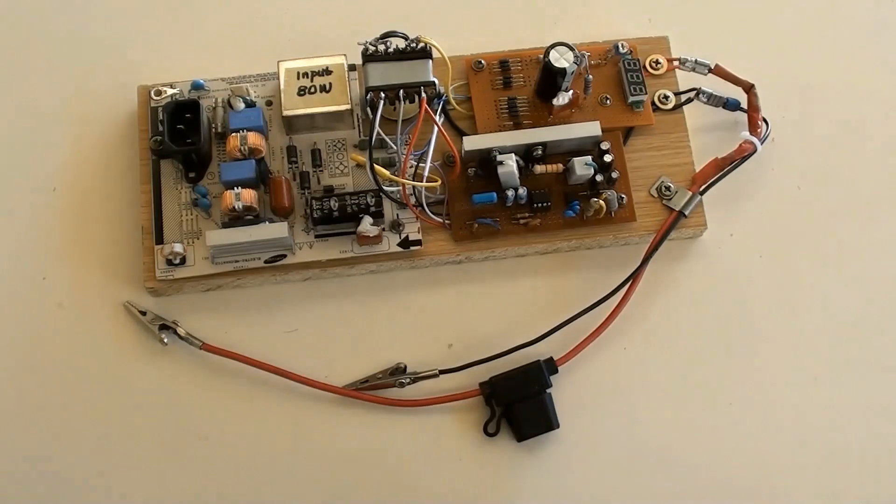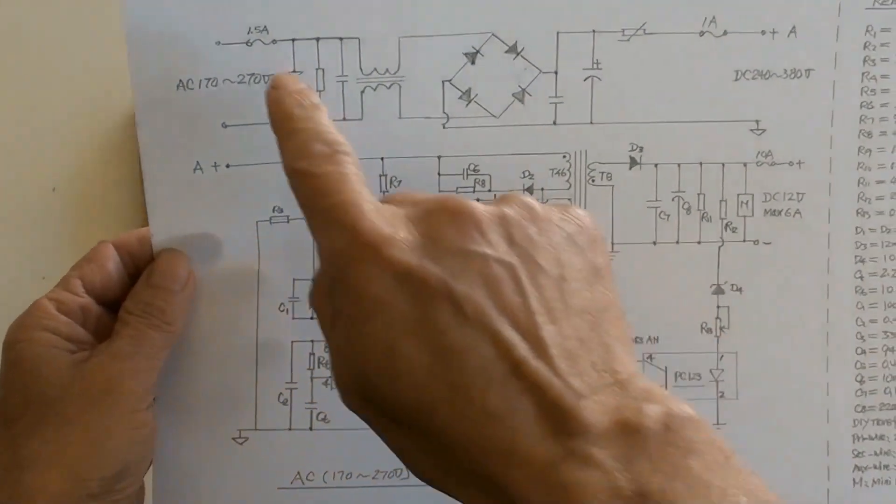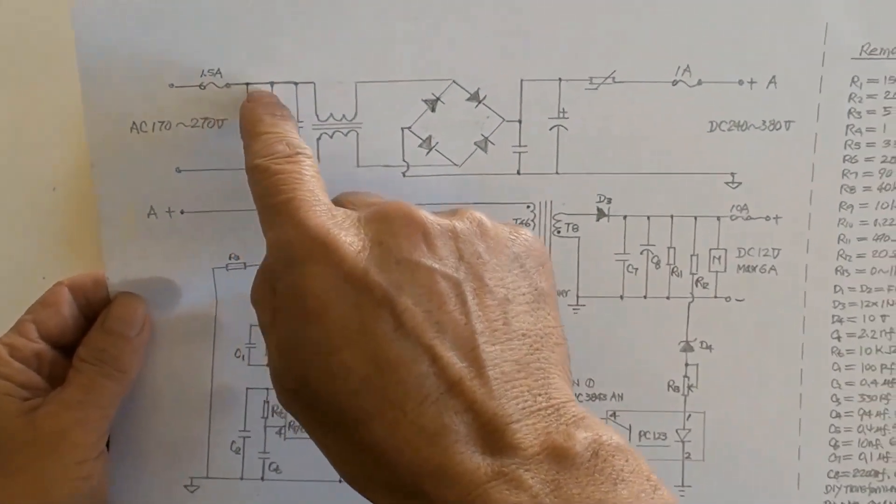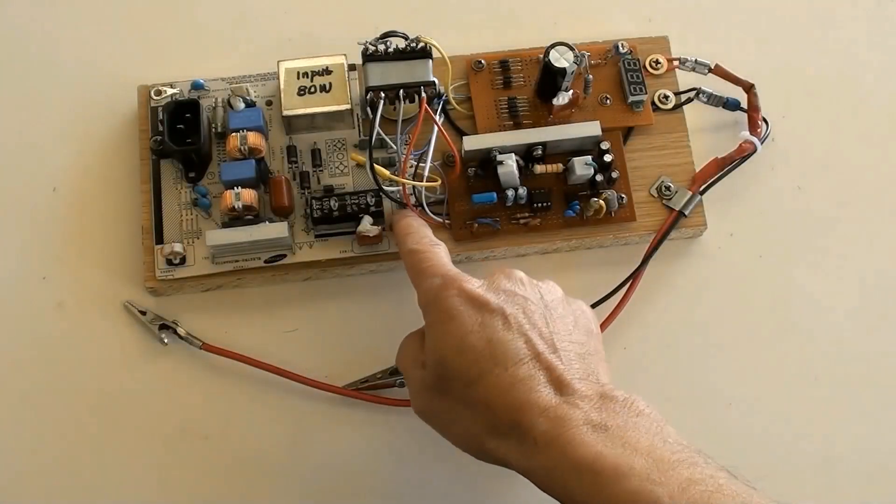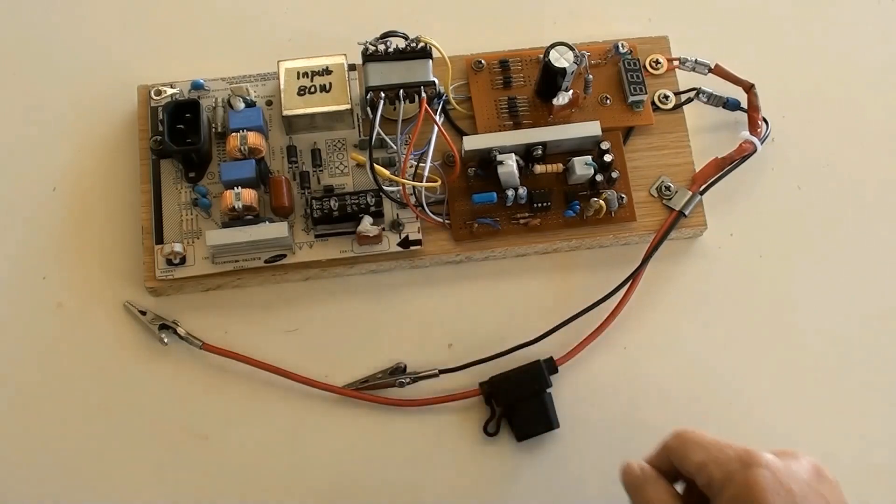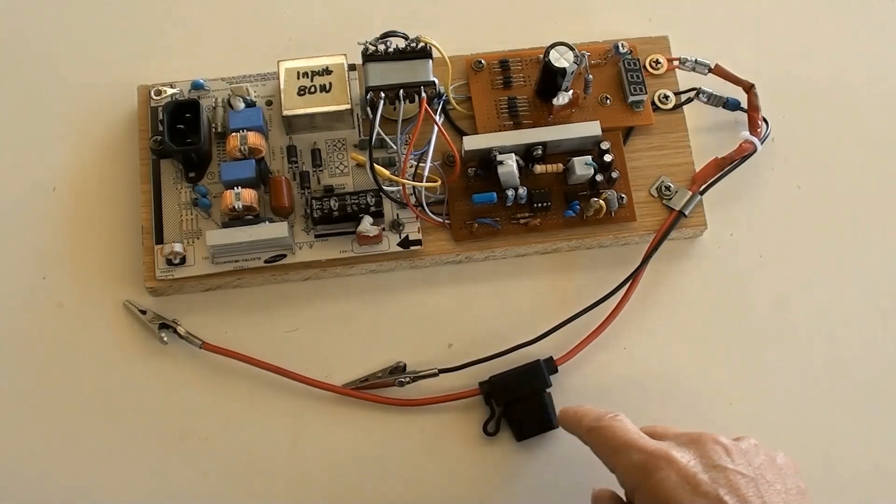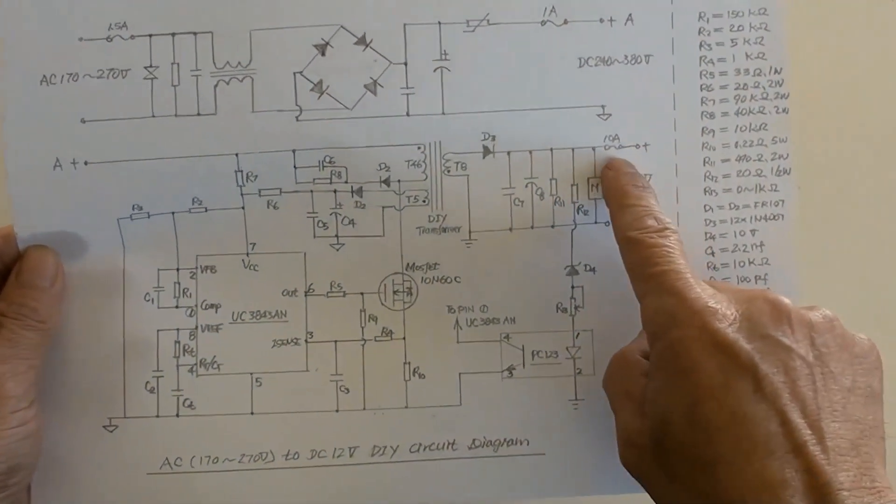This is a 1.5 amperes fuse at the input side. And there is another one under here. This is a 10 amperes fuse at the DC 12 volt of the output side.